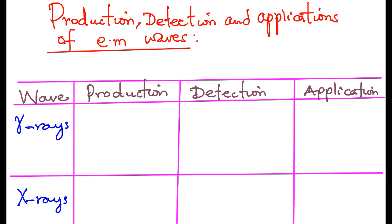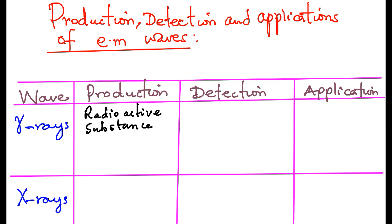Gamma rays are normally produced by radioactive substances. They are produced when there is an energy change in the nuclei of radioactive substances.